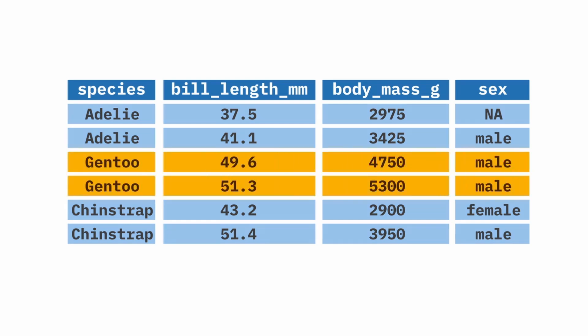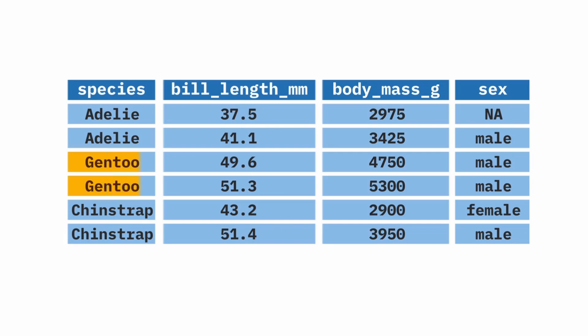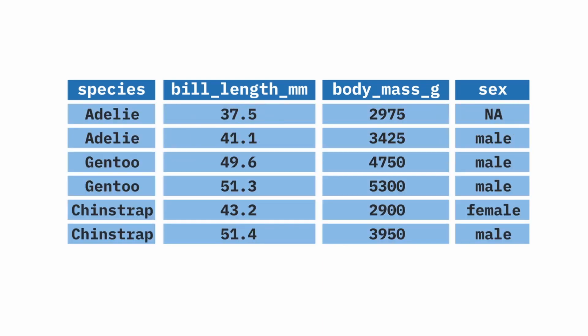The next function we'll cover is filter. Whereas select allowed us to keep or drop columns, filter will allow us to keep or drop rows. What you can see happening here is we're starting with our original penguins data frame, but then we're filtering to only include some of the rows.